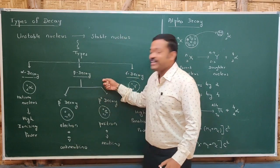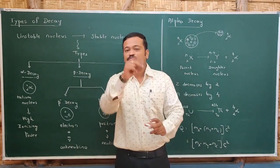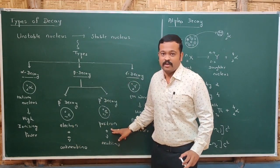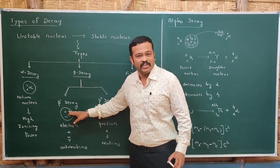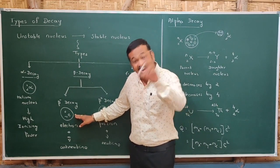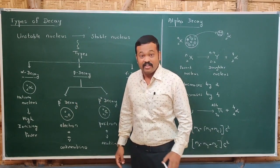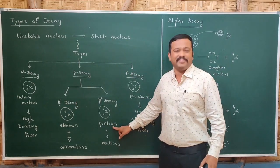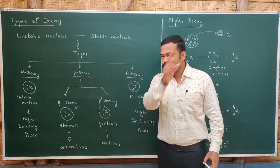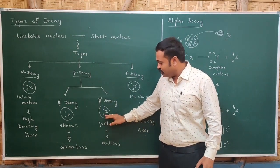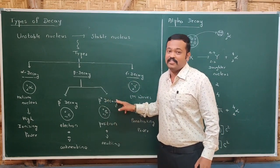If a beta particle is emitted from the nucleus, then that decay is called beta decay, and beta particles are of two types: electron and positron. An electron is a particle whose charge is minus 1 and mass is 0. If this particle is emitted, that decay is called beta minus decay. A positron is a particle similar to an electron but positive in charge, so plus 1 and mass 0. If this particle is emitted, that decay is called beta plus decay.